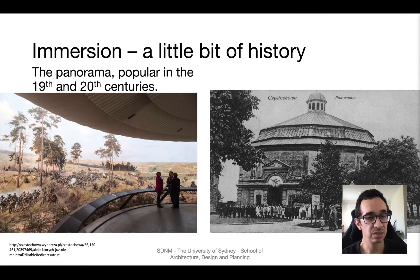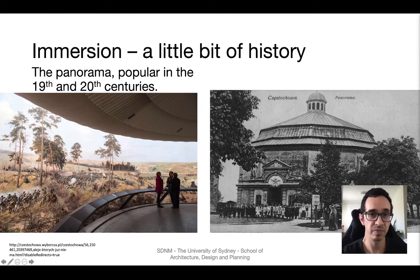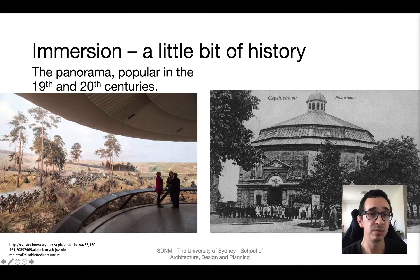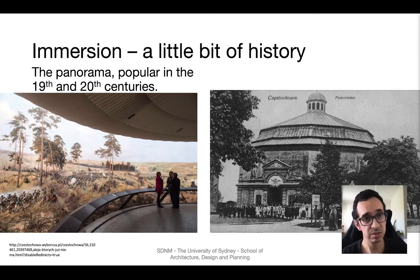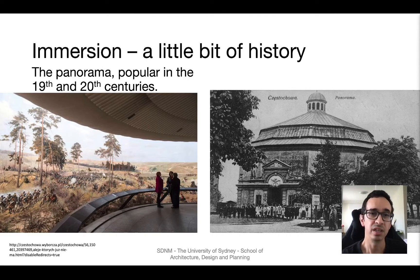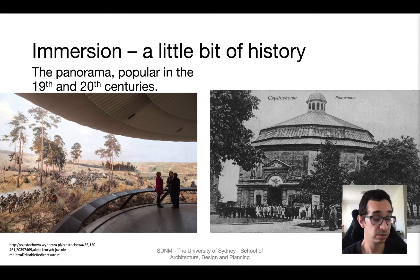Something that was popular in the 19th and early 20th century is that of the panorama, where a building would contain a fairly photorealistic painting in a circular environment, so you're completely surrounded by it. The perspective characteristics are very well preserved so that the viewer thinks they're somewhere else. There's actually one in the Blue Mountains — the only one discoverable in New South Wales — if you're interested in seeing a panorama.